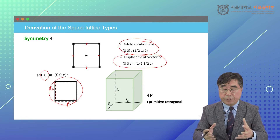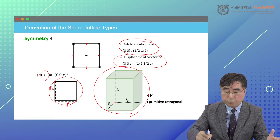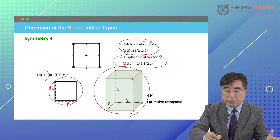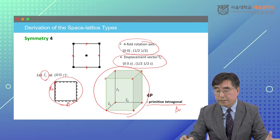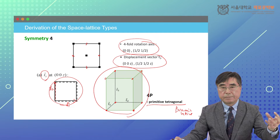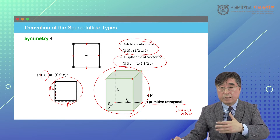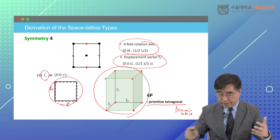When you define the unit cell like this, there is only one lattice point in a unit cell. So this is primitive tetragonal Bravais lattice. One crystal system called tetragonal crystal system is developed starting from four-fold rotational symmetry, and there is one primitive tetragonal Bravais lattice.